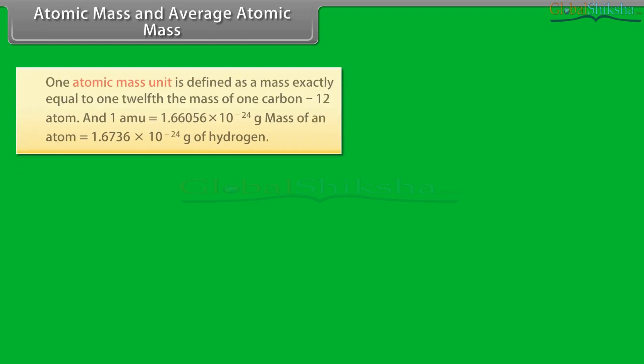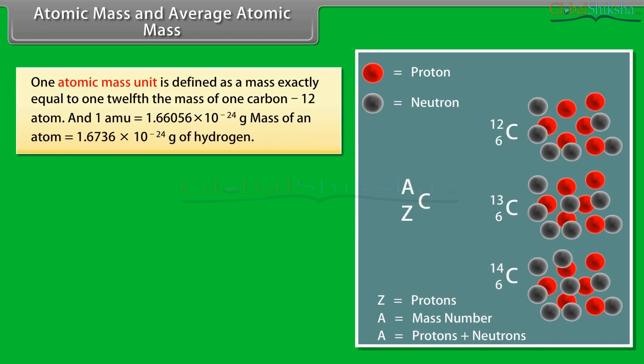Atomic mass and average atomic mass: the atomic mass unit is defined as a mass exactly equal to one-twelfth the mass of one carbon-12 atom. One amu equals 1.66056 × 10⁻²⁴ grams. The mass of a hydrogen atom is 1.6736 × 10⁻²⁴ grams.